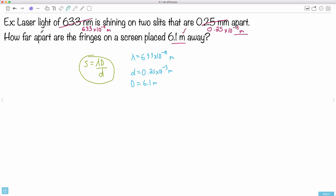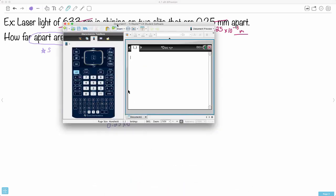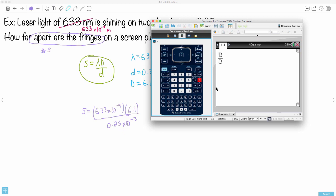If we want how far apart the fringes are, this question is asking: what do we want? We want the fringe separation, which is s. I don't even have to rearrange this—it's so easy. I just put in all the numbers: 633 times 10 to the minus 9, all that times 6.1, all that divided by 0.25 times 10 to the minus 3. I just need a calculator for this.